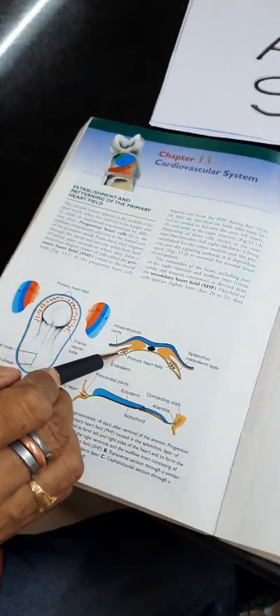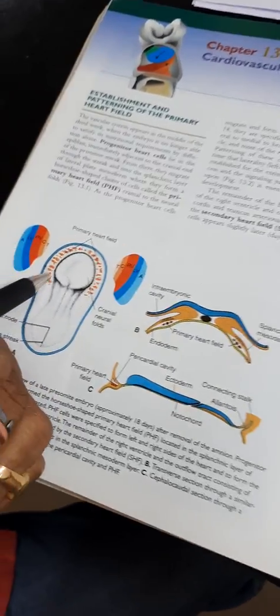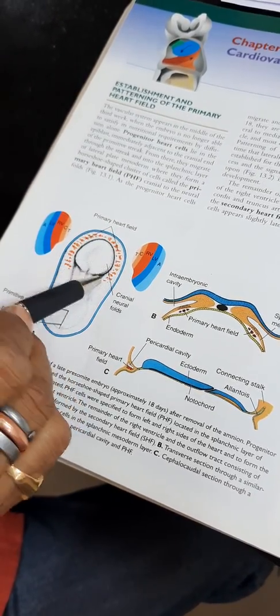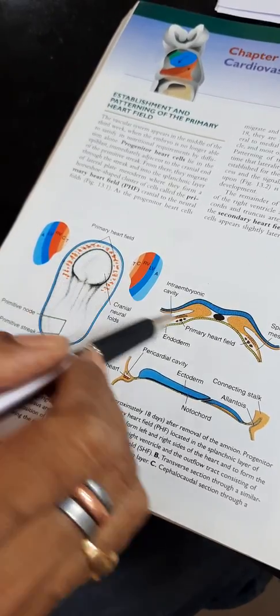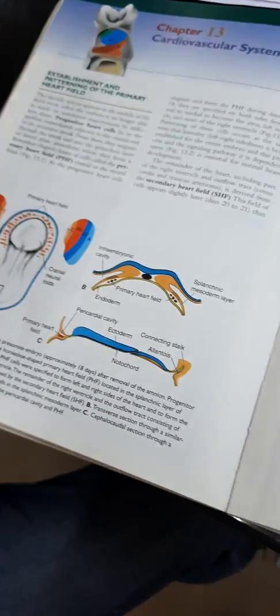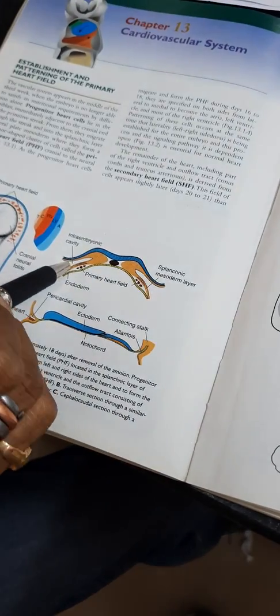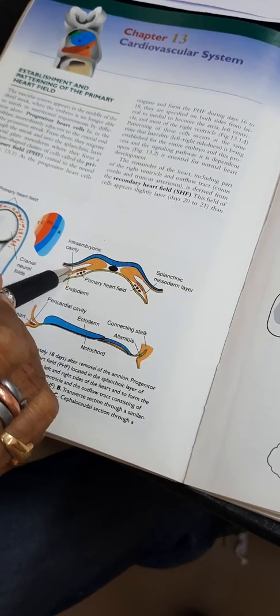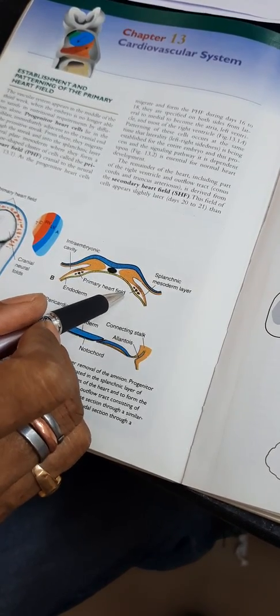Now come to this diagram. This is the primary heart field — a horseshoe-shaped primary heart field. These are red island-type angiogenic cell clusters. So this primary heart field is horseshoe-shaped, located in between the splanchnopleuric and endoderm. This is called the primary heart field.